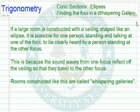If a large room is constructed with a ceiling that is shaped like an ellipse, it's possible for one person standing and talking at one of the foci to be clearly heard by a person standing at the other focus. This is because the sound waves from one focus reflect off the ceiling so that they travel to the other focus. Rooms constructed like this are called whispering galleries.